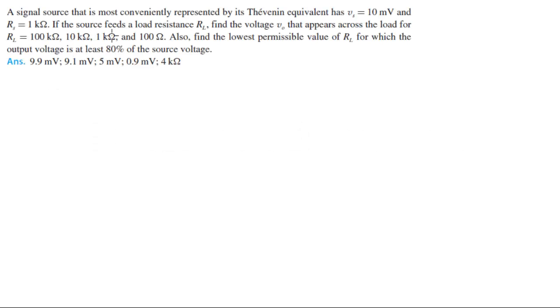Alright guys, a signal source that is most conveniently represented by Thevenin equivalent has VS equal to 10 mV and RS is equal to 1K. Right off the bat, it's always better to draw these things to start visualizing the problem.